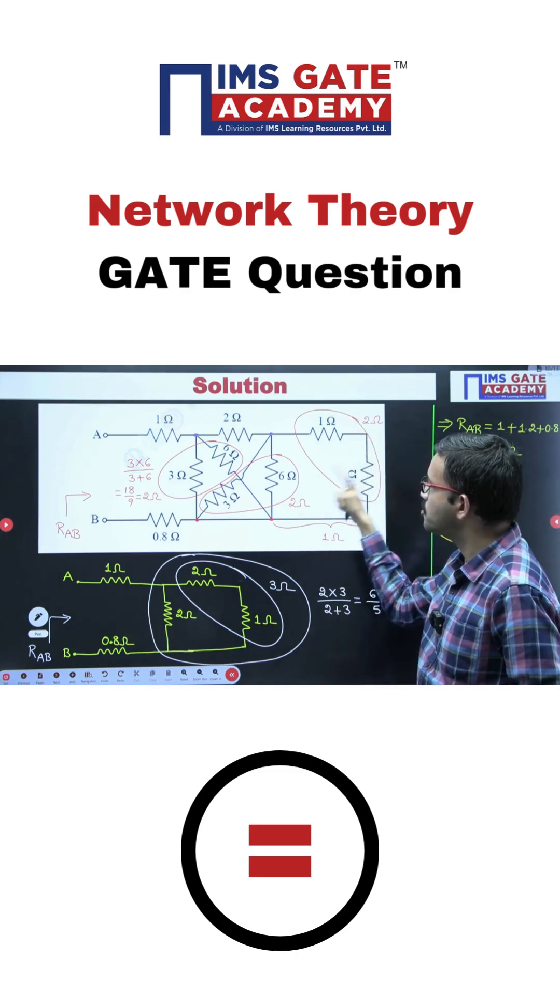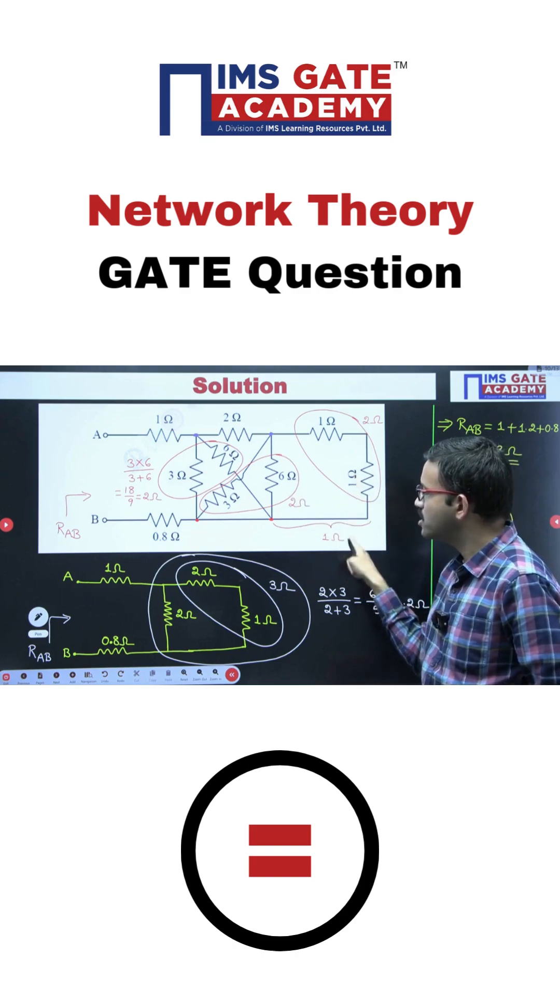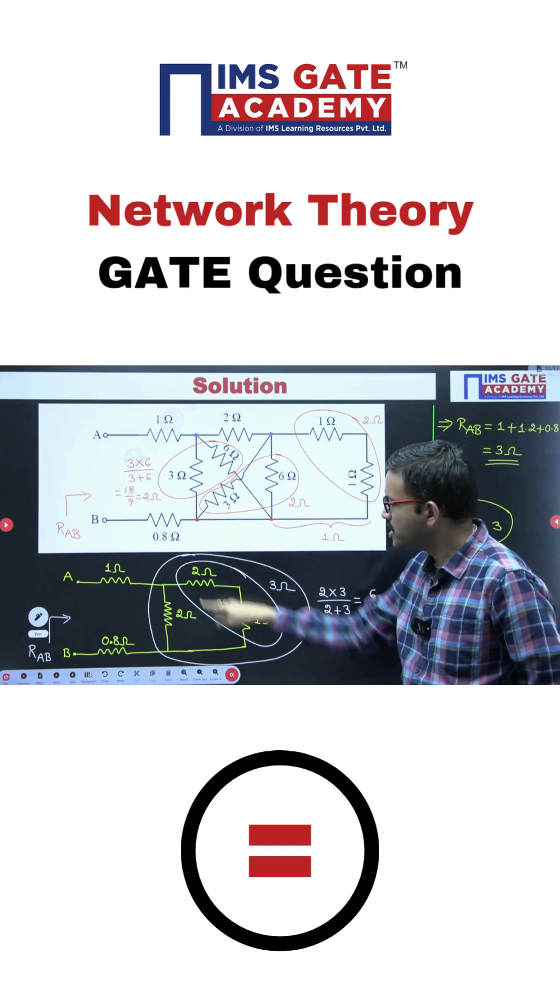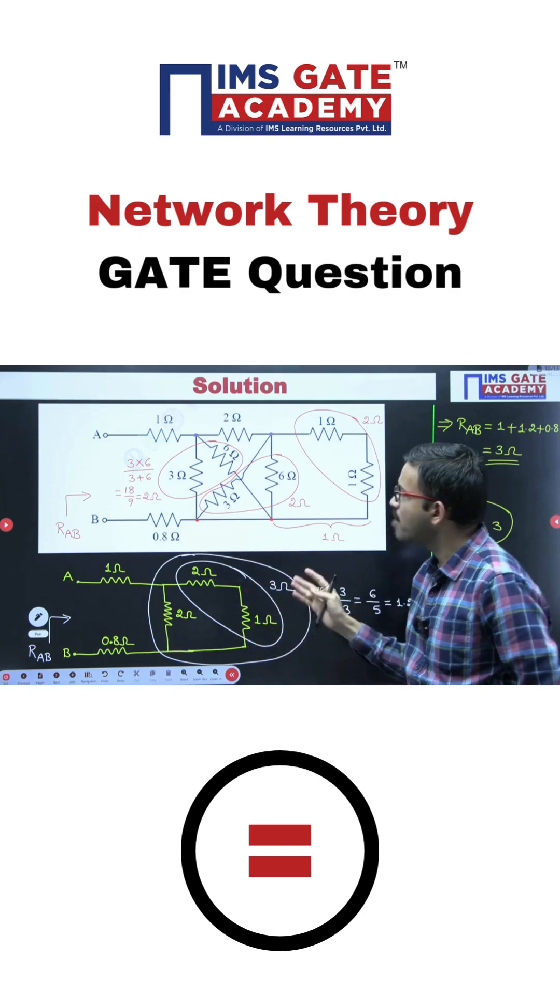Both are connected in parallel, giving you equivalent resistance as 1 ohm. And this 1 ohm resistance is in series with 2 ohm, so together you are getting 3 ohm resistance.